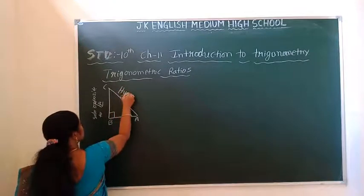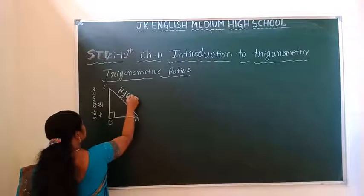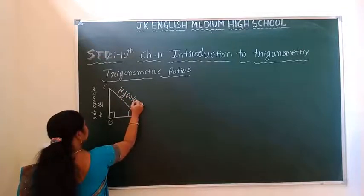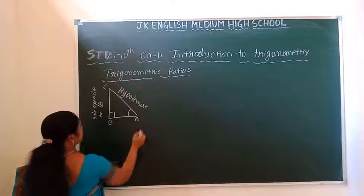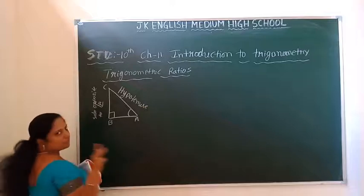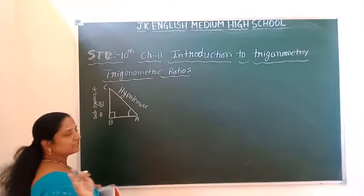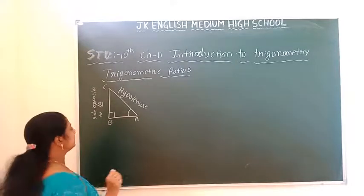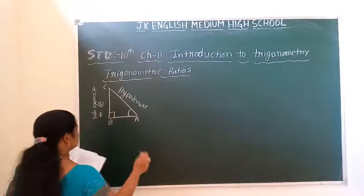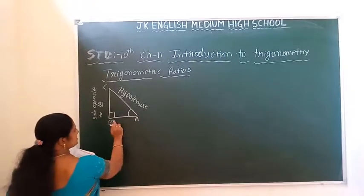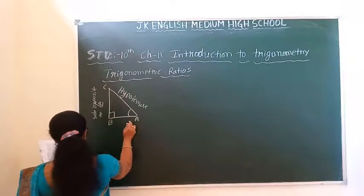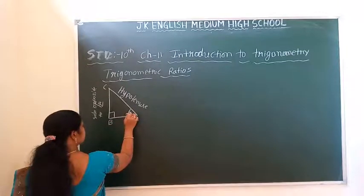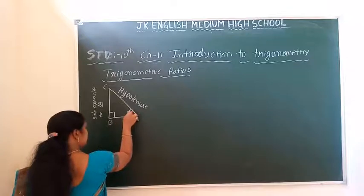The side opposite to 90 degrees is called the hypotenuse. This is the hypotenuse — it is the longest side of a right-angled triangle. Then, the side adjacent to angle A is called the side adjacent to the acute angle.